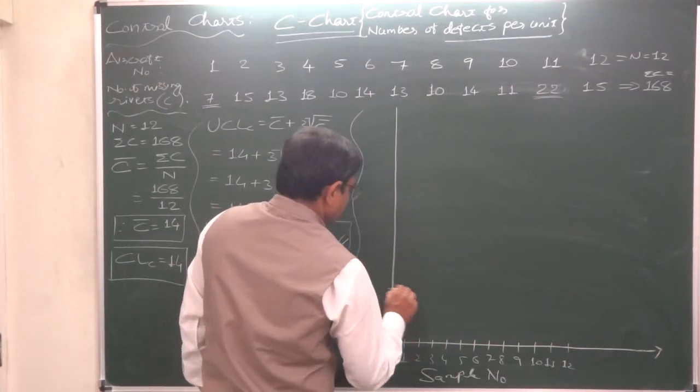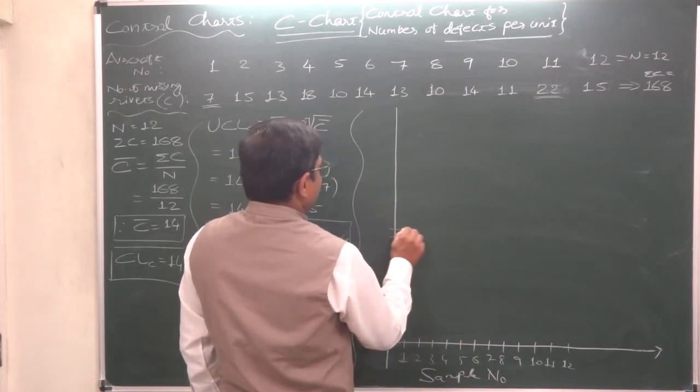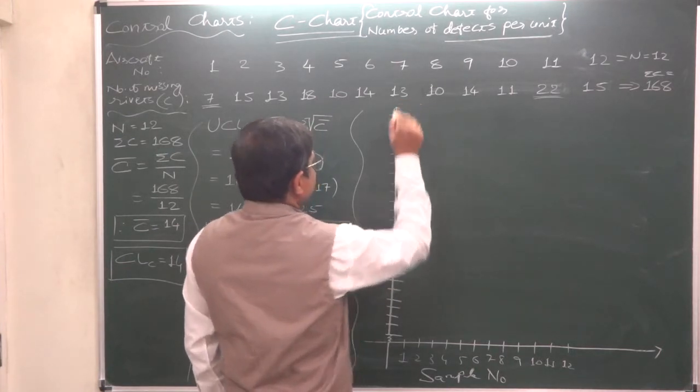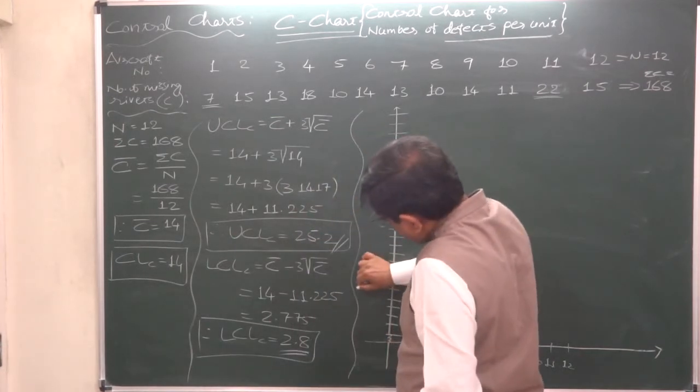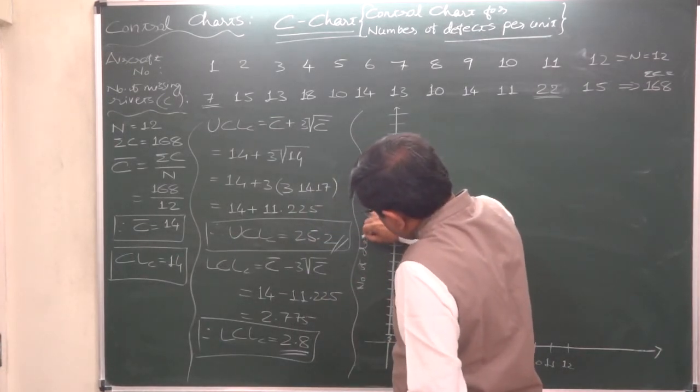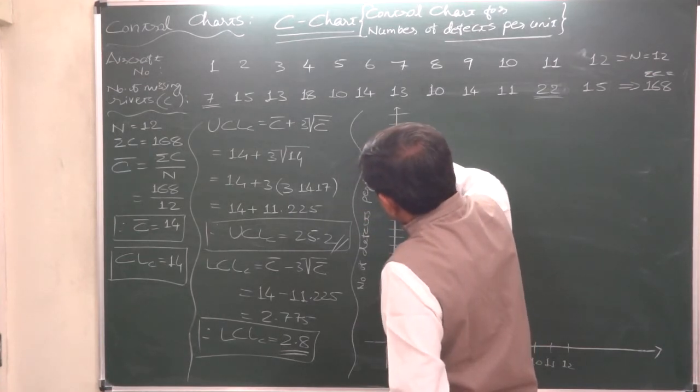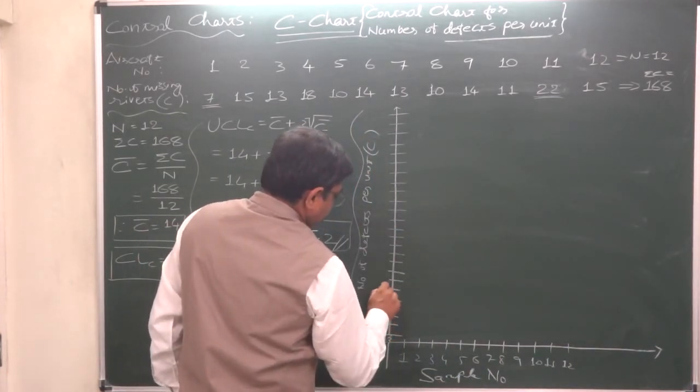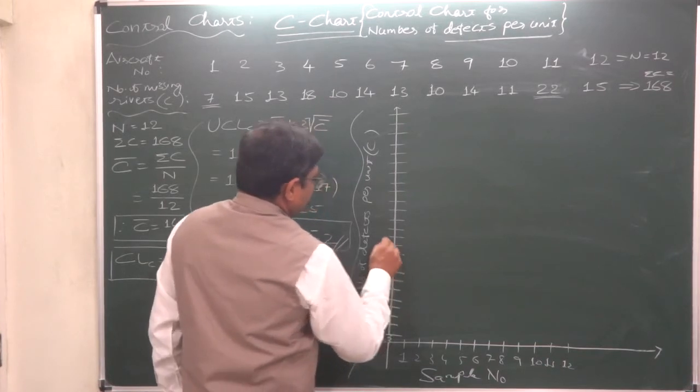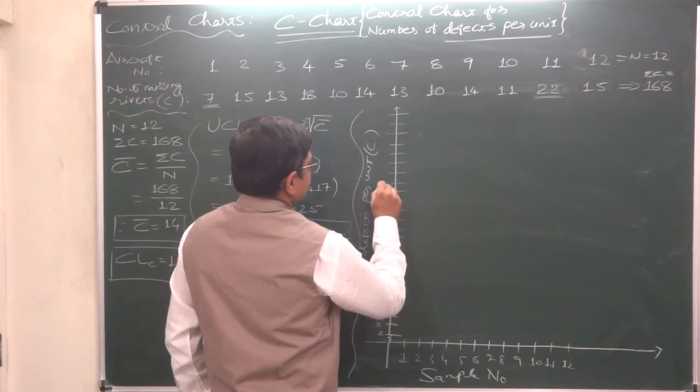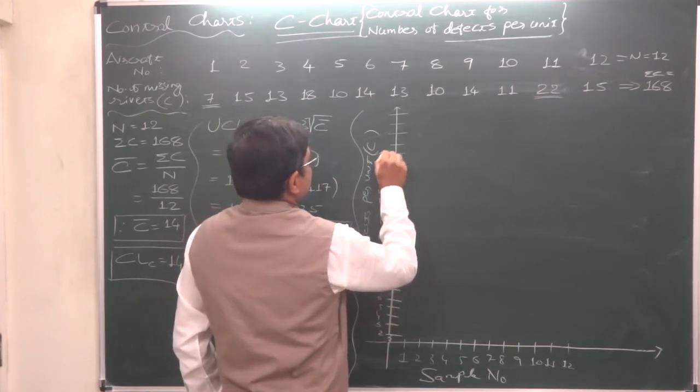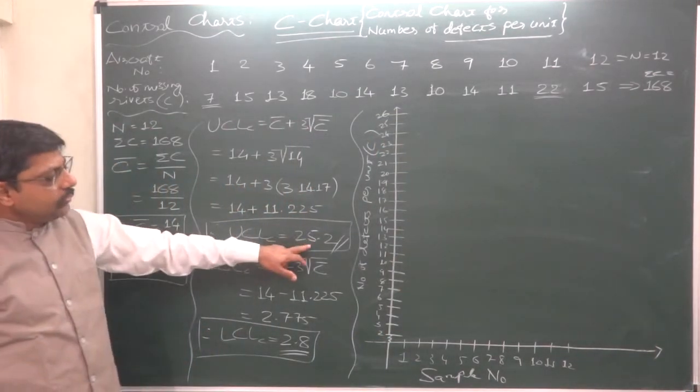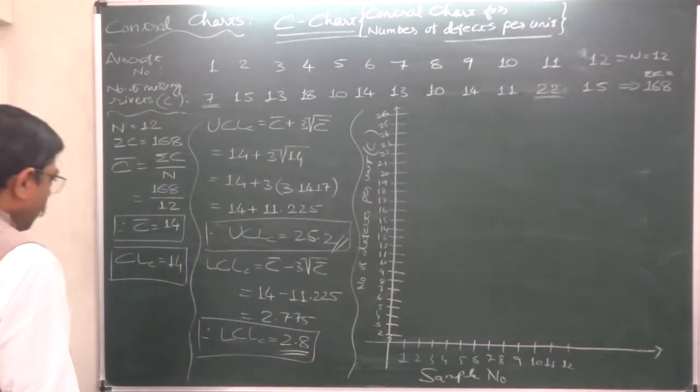2, 3, 4, 5, 6, 7, 8, 9, 10, 11, 12, 13, 14, 15, 16, 17, 18, 19, 20, 21, 22, 23, 24, 25, 26. Okay. These are number of defects per unit—number of defects per unit. In short, it is C. 2, 3, 4, 5, 6, 7, 8, 9, 10, 11, 12, 13, 14, 15, 16, 17, 18, 19, 20, 21, 22, 23, 24, 25, and 26, because we need to plot to 25.2.